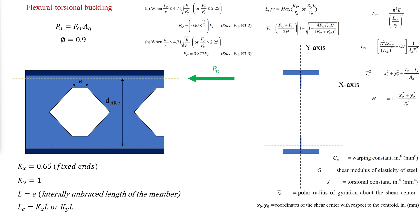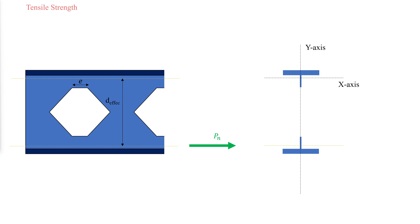The shear center of the T section can be assumed to be located at the point where the flange center line meets the stem center line, and thus X0 is 0. The tensile strength of the T section is equal to the yield strength multiplied by the gross area of the T section, reduced by a factor of 0.9.